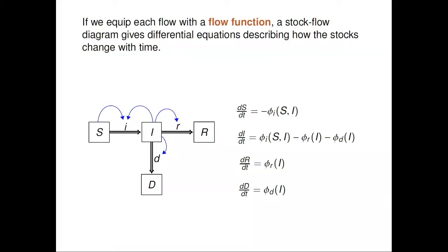There's a bit more to it. To get an actual model, we need to equip each flow with a function, which I call a flow function. That function will be a function of several variables, corresponding to the various stocks that have links pointing to that flow. For example, the flow 'infection' will be some function of the number of susceptible people and the number of infected people, because the links are pointing from those two stocks. It could be any function in principle — I'll call it phi sub i.